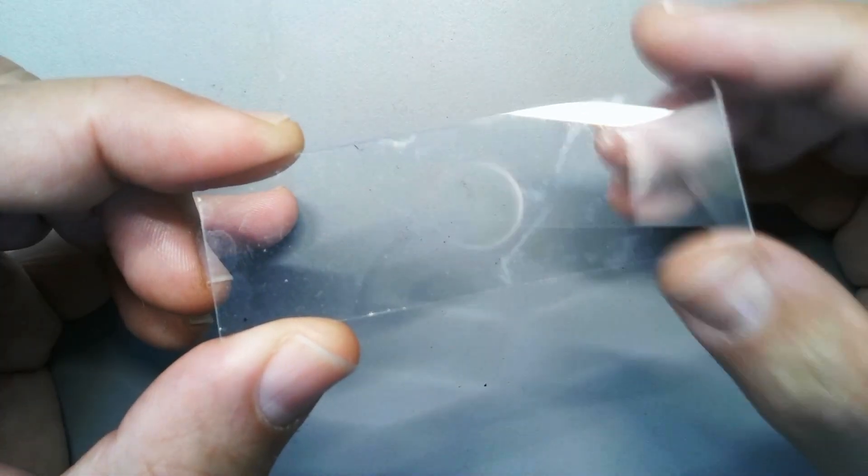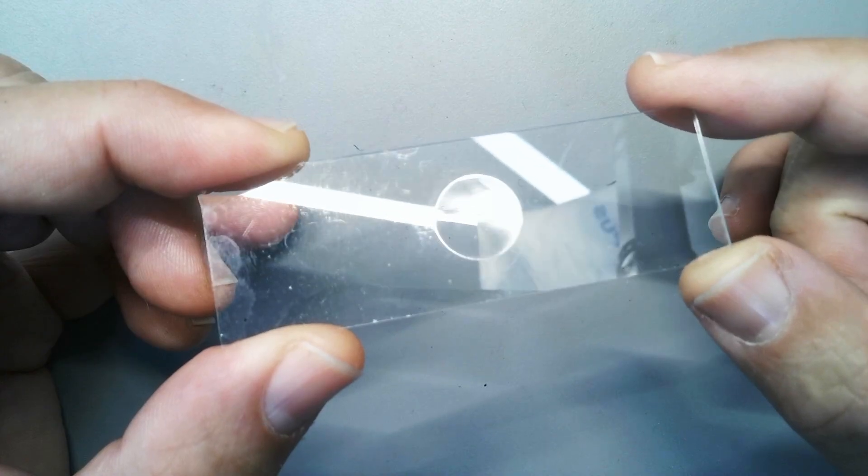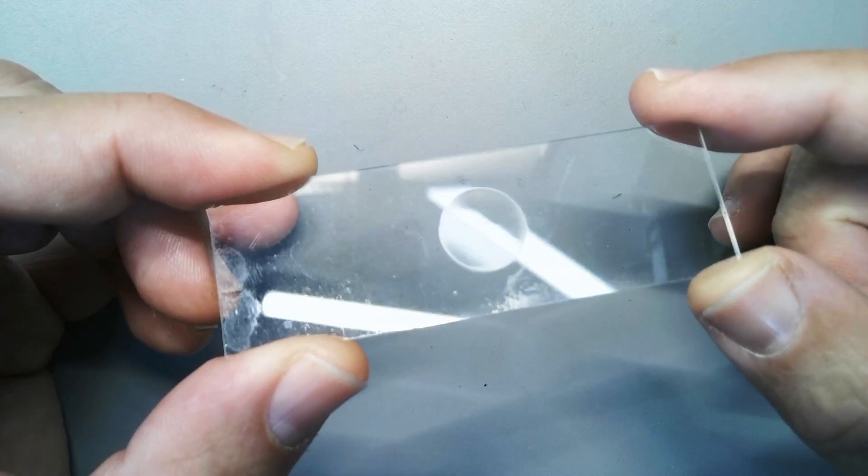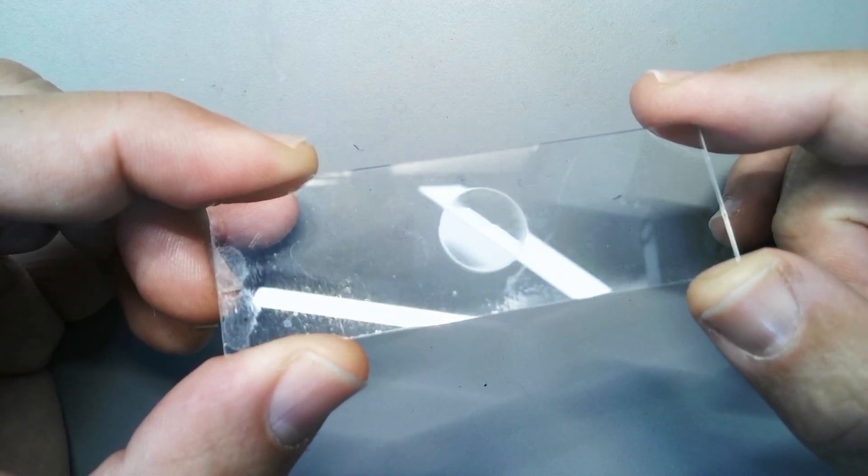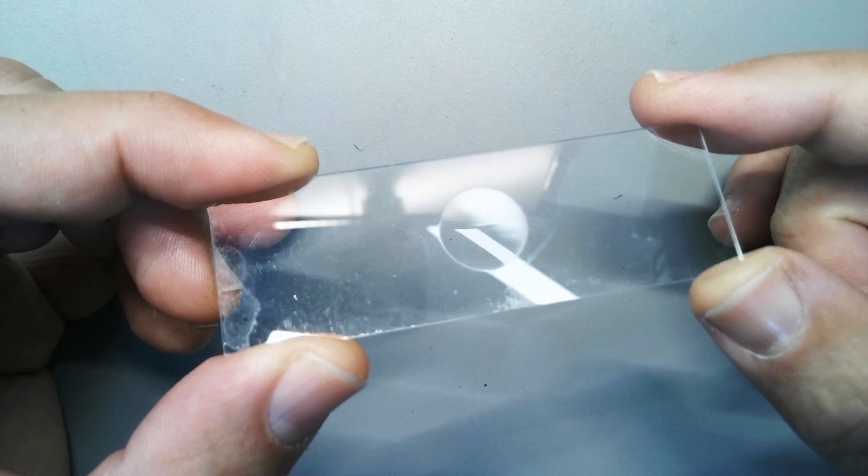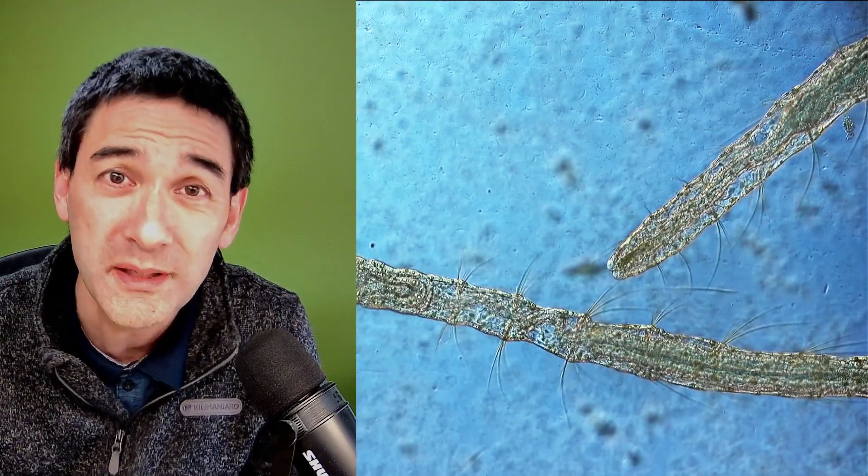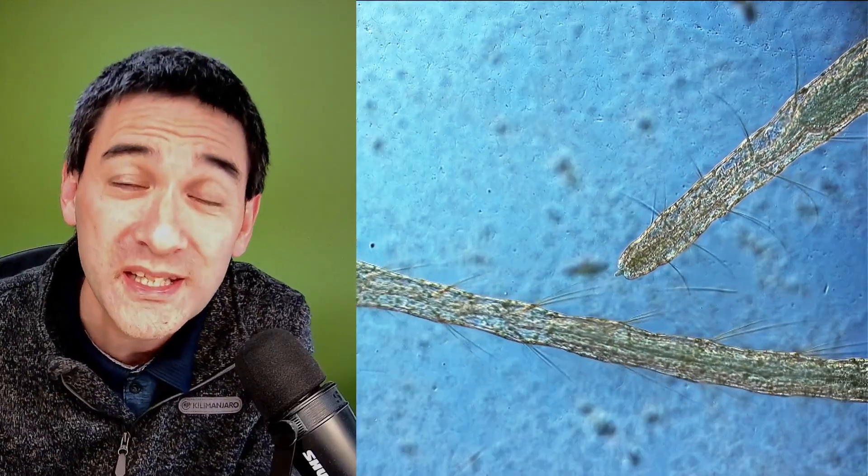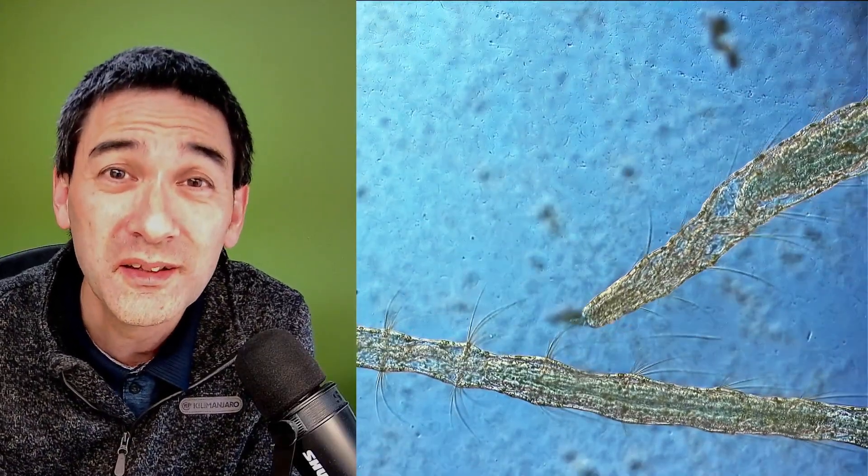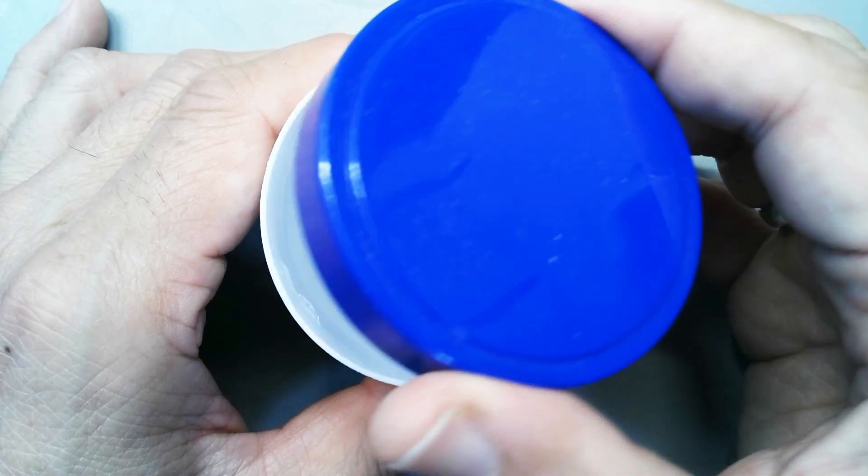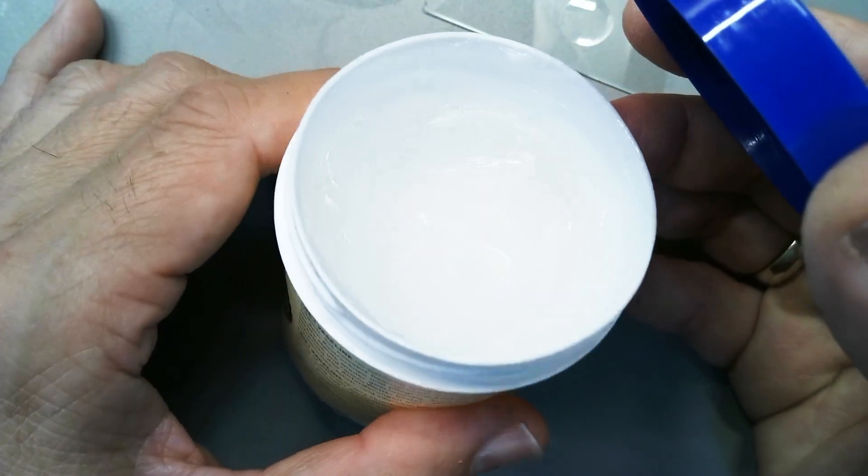So what you need is a so-called concave microscope slide. They can be bought online. Some come with only one indentation, others with two. I would actually say get the ones that only have one indentation, basically only one depression in the slide because we need the space around this depression to apply a little bit of Vaseline.